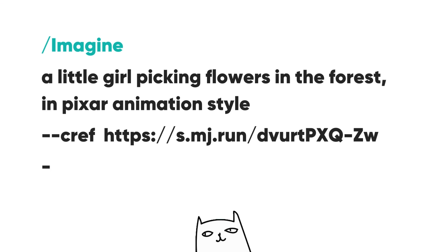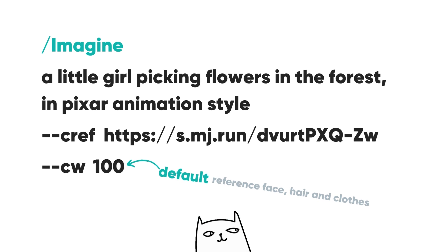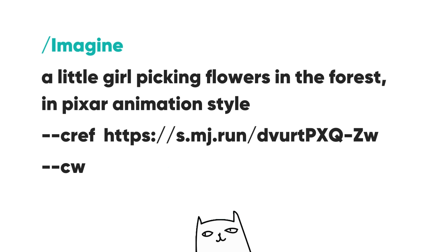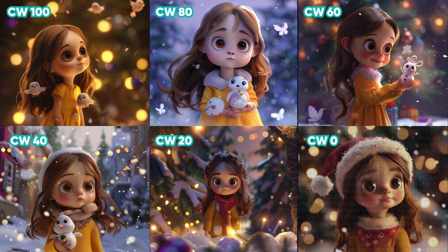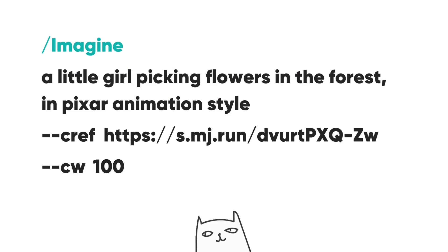After that, we can also use dash dash CW to modify character reference strength from 100 to 0. Strength 100 is default and uses all the character details including the face, hair, and clothes as reference. At strength 0, it just focuses on the face if you want to change the outfit and hair. Here are the character weight results for the same reference image ranging from 100 to 0 for the prompt: a little girl in Christmas time, Pixar animation style. You can see that the less the character weight, the less the image resembles the reference in terms of hair and outfit, but the more it adheres to the text prompt. In this video, I want the character to match all the character details as much as possible, so I'll leave the CW parameter at default.